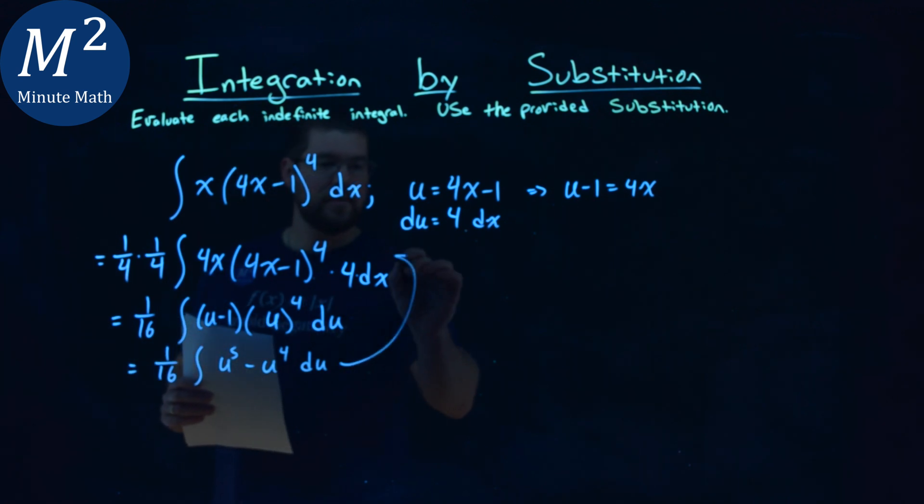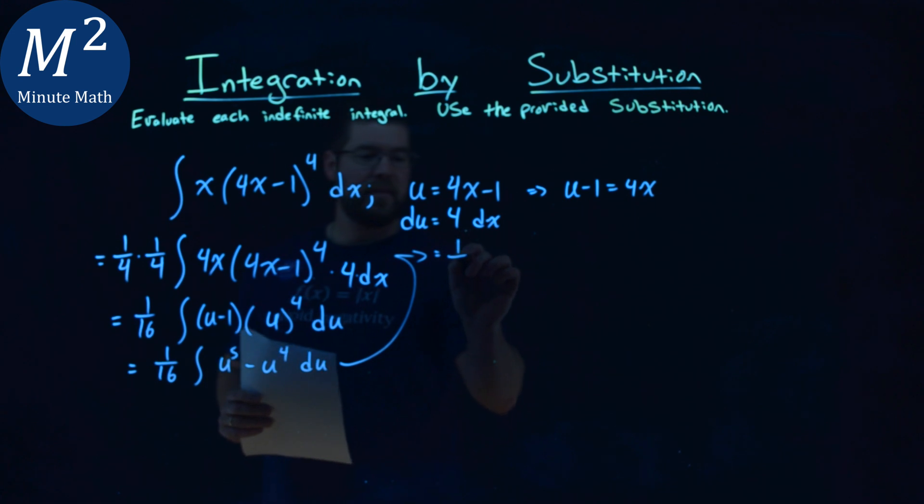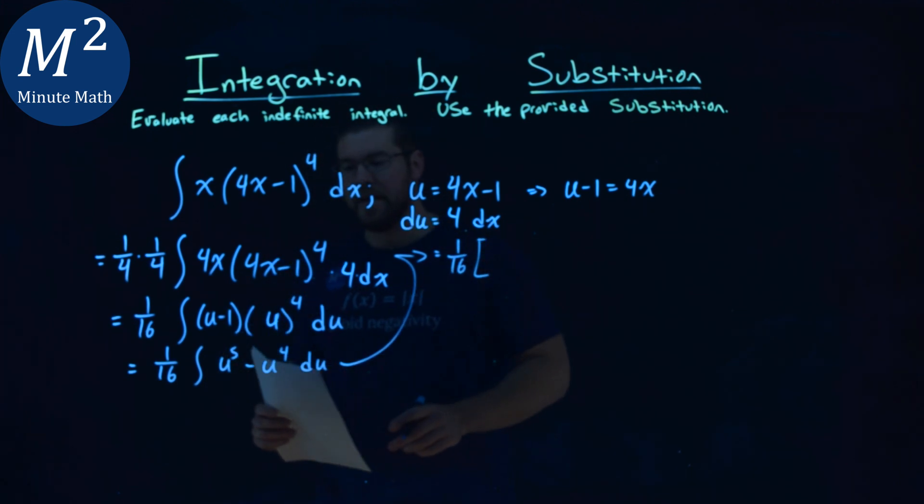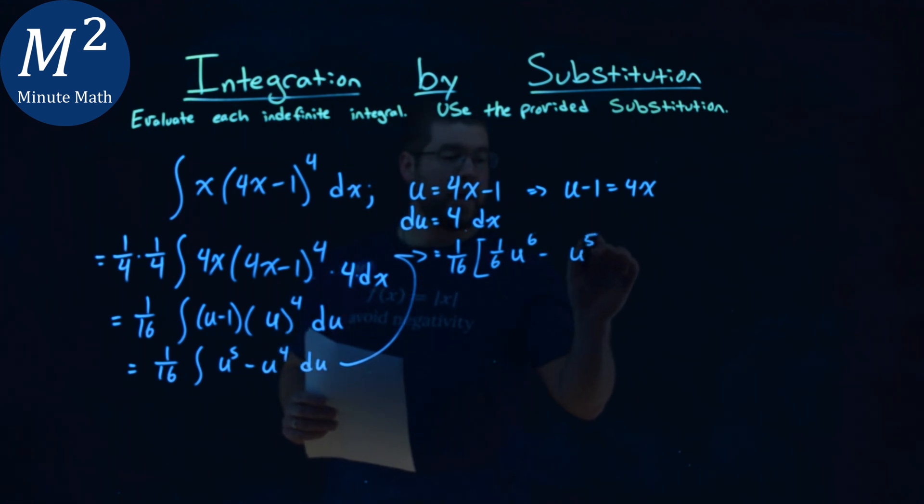And this is a much easier integral to take, in my opinion. 1/16th stays out front here, and now we'll be multiplying this whole thing by the integral. So, power rule, we have u now raised to the 6th power, and put a 1/6th out front. Minus u to the 5th power, and we put a 1/5th out front to cancel it out.